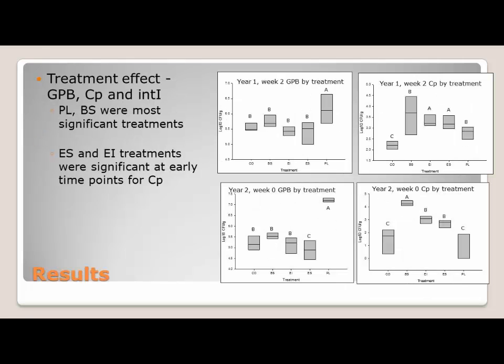What we like to do is look at a point in time for these particular treatments, rather than the whole scale, to get away from some of the noise. Looking at gram-positive bacteria early in year one and at week zero and week two of year two, we see that poultry litter is the dominant source of gram-positive bacteria. Looking at Clostridium perfringens, biosolids are dominant. There is an early influence of the effluent, but that tends to fade away over time.